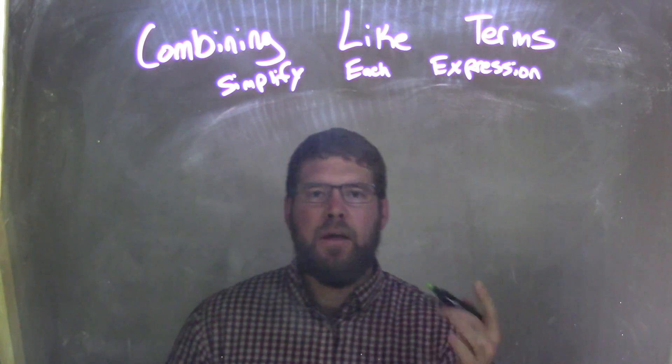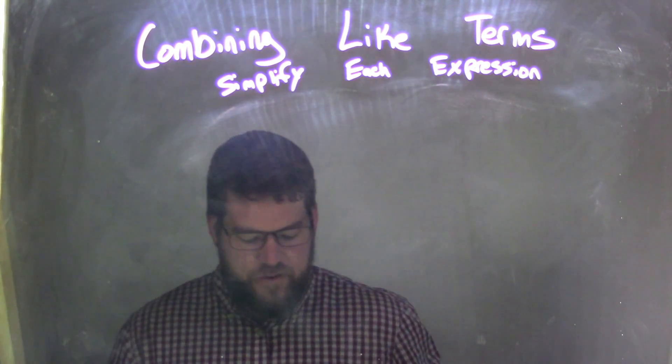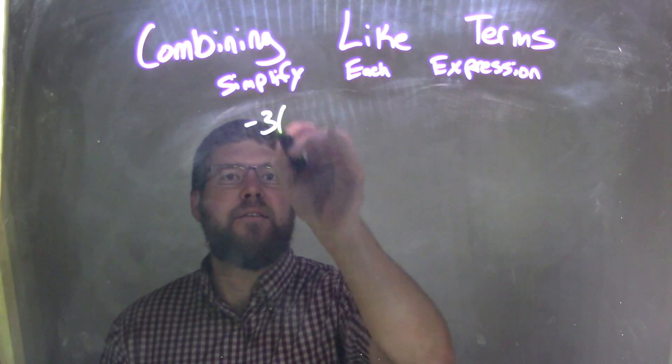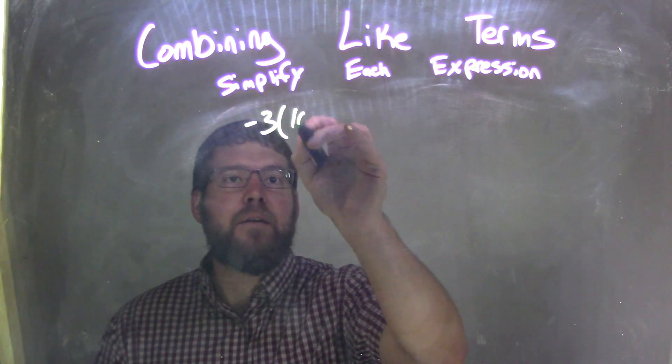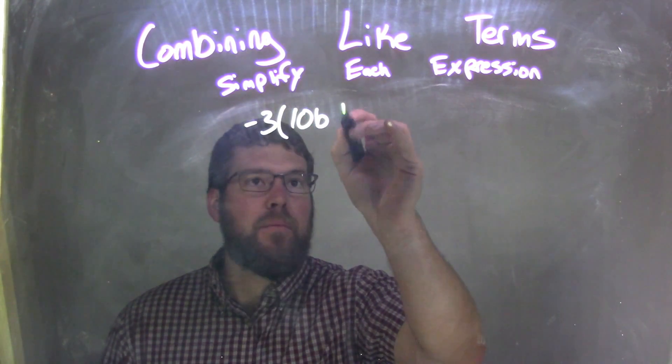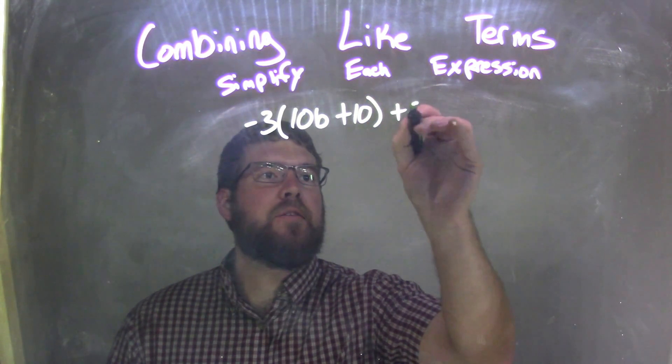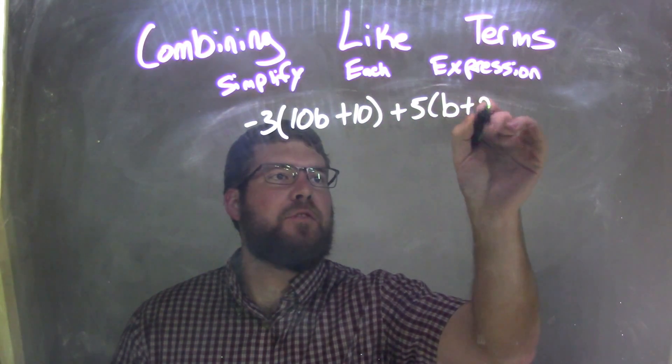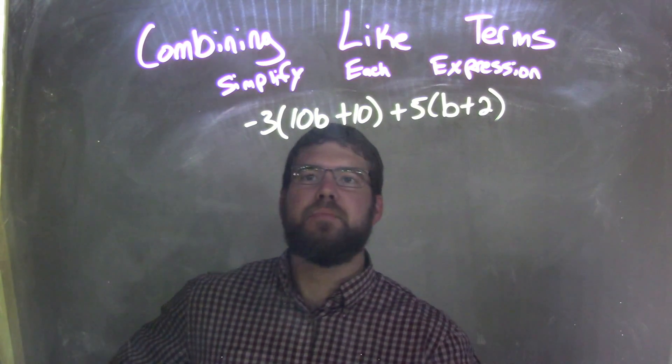We want to simplify each expression. So if I was given this expression, negative 3 times 10b plus 10, plus 5 times b plus 2.